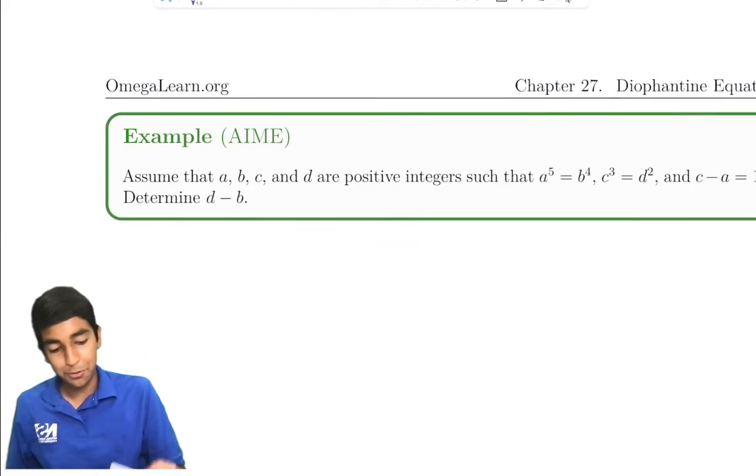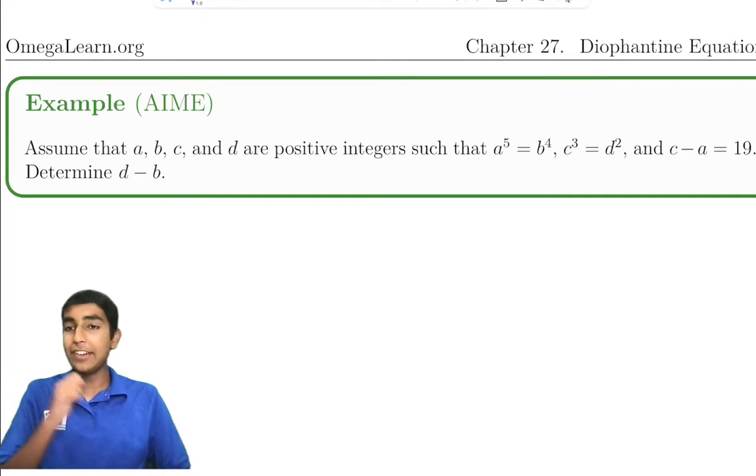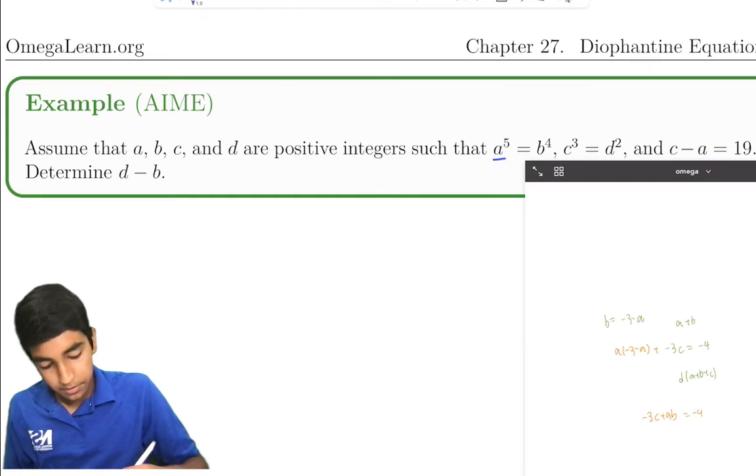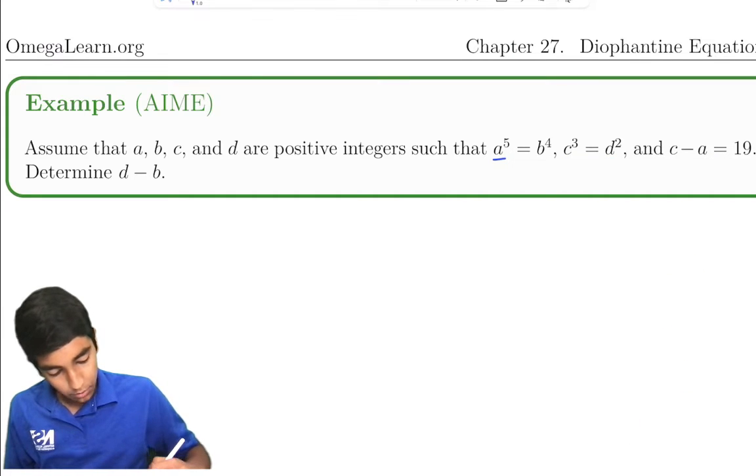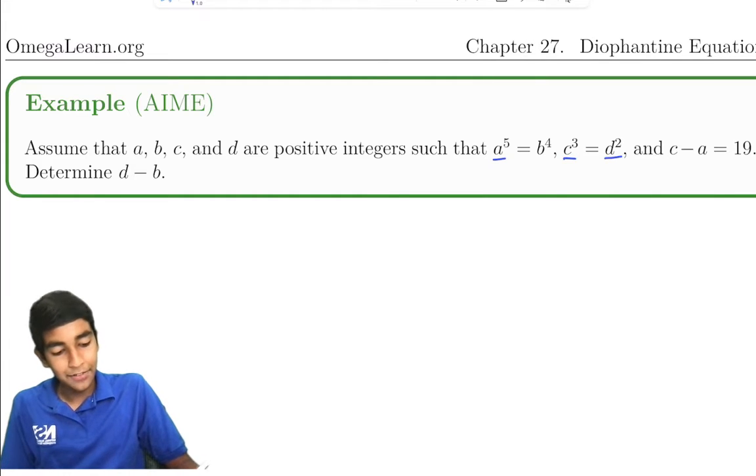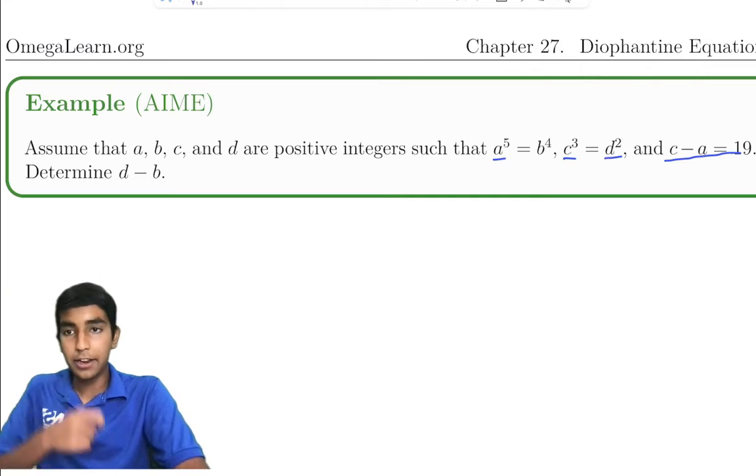Next off, we've got another cool problem from the AIME. Let a, b, c, and d be positive integers such that a⁵ = b⁴ and c³ = d². We also have that c - a is 19. Determine d - b.